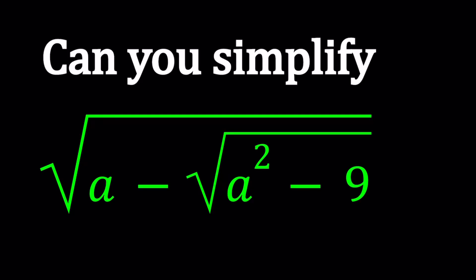Hello everyone. In this video we're going to be simplifying a nice radical. We have the square root of a minus the square root of a squared minus 9, and we're going to be simplifying this expression and find something in terms of a.